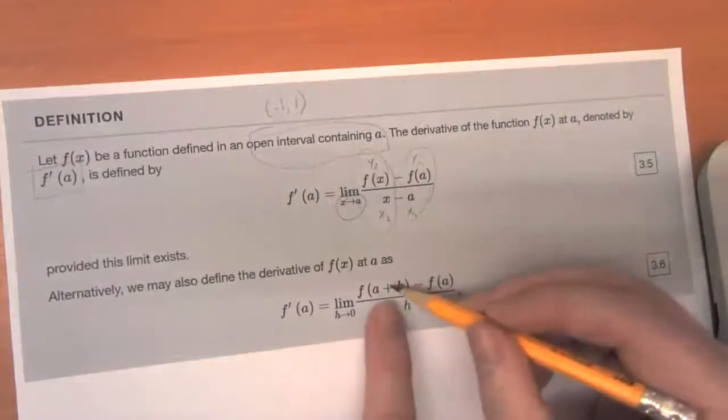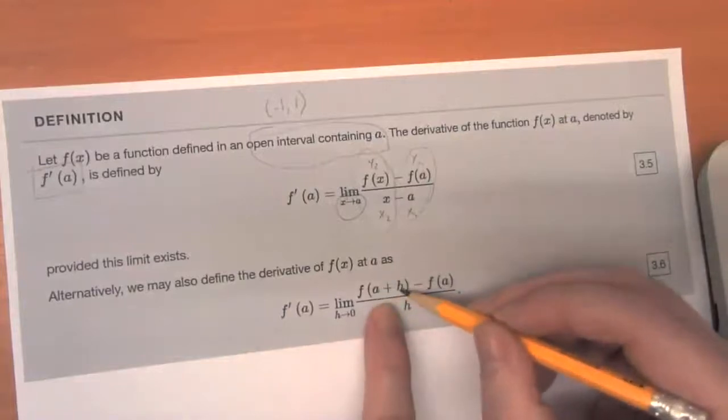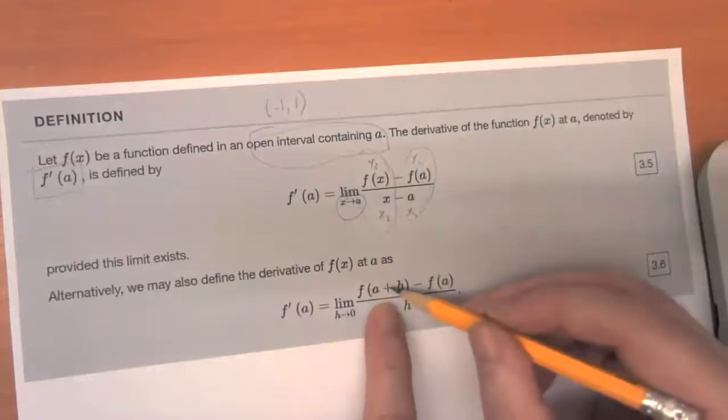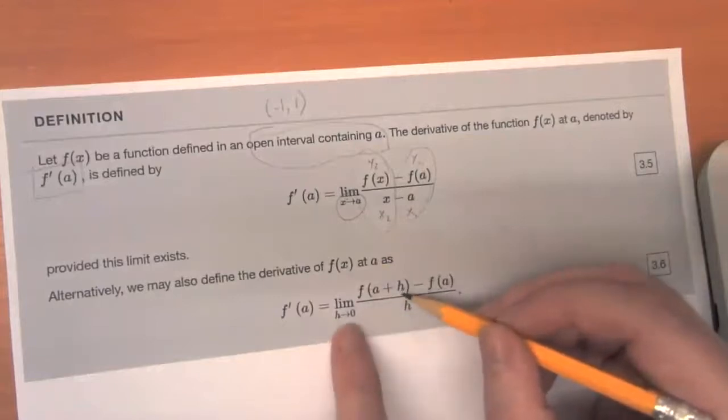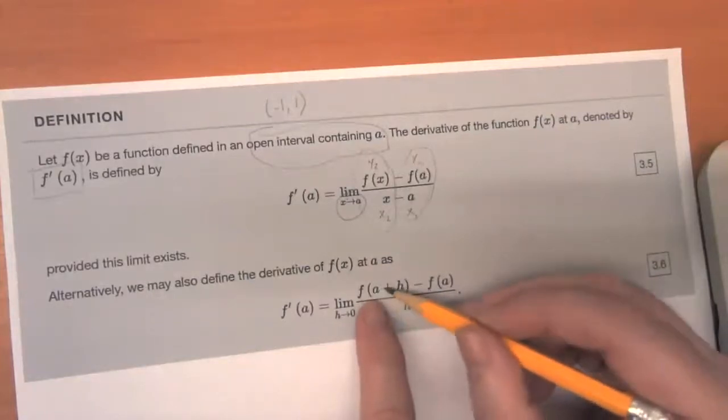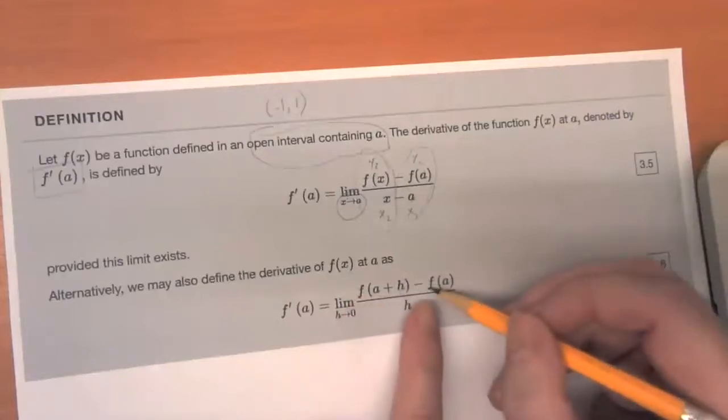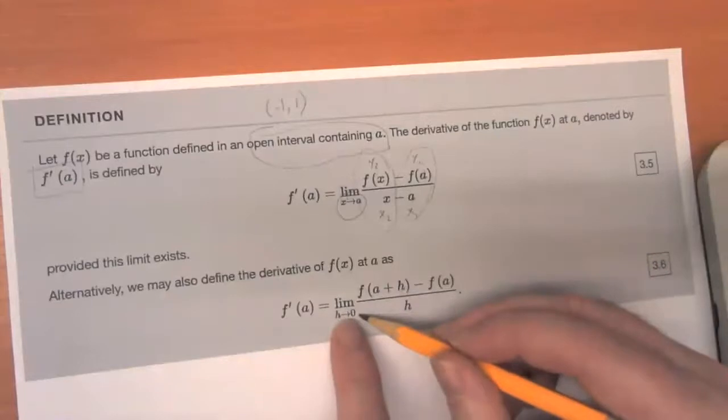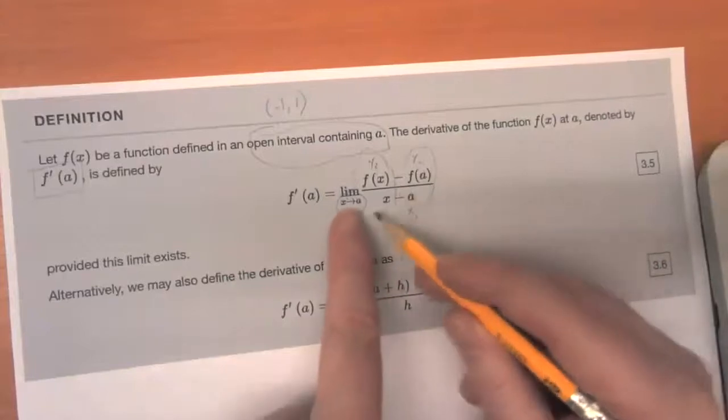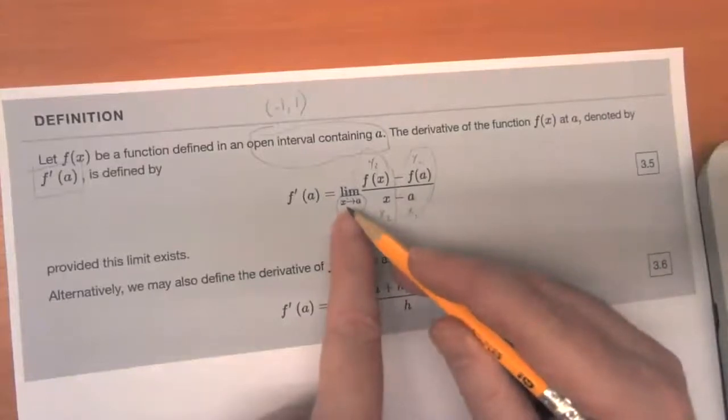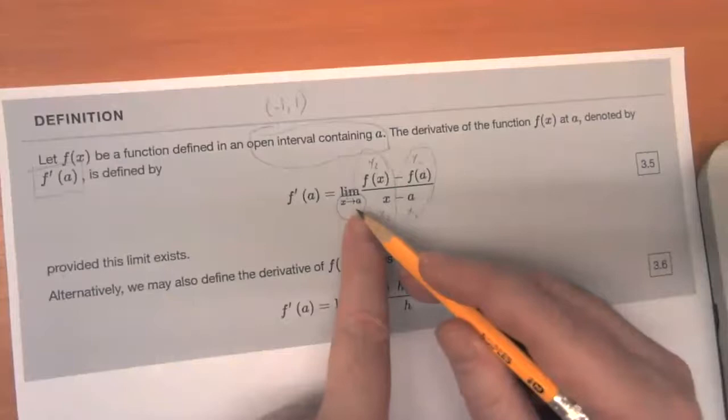So if H is small and positive, then F of A plus H is the output for an input that's a little bit more than A. If H is small and negative, then A plus H is a little bit less than A. And so this is talking about the difference between the output values as the difference between the fixed point and the moving point approaches zero, which is the same thing as saying as the moving point gets closer and closer to the fixed point.